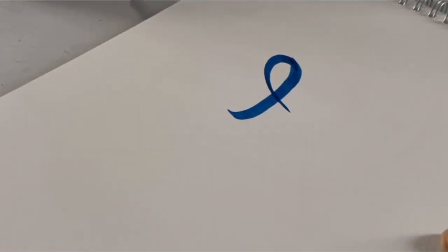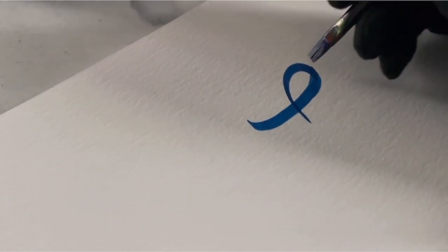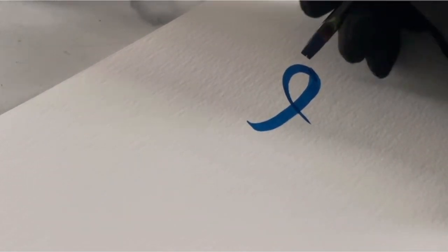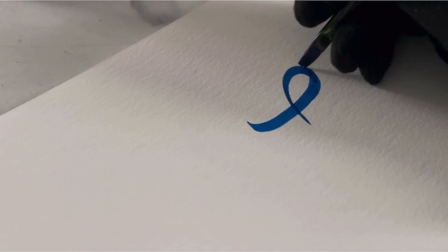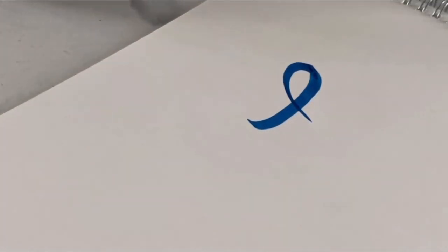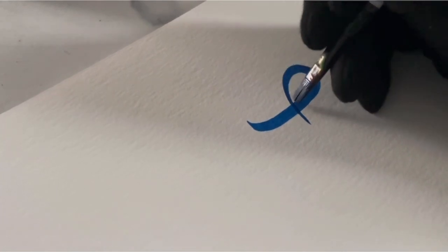And to do the opposite, to get a thin line, I just used a light hand. Again here I'm going over my lines just making sure I've got a nice smooth edge to all my letters.